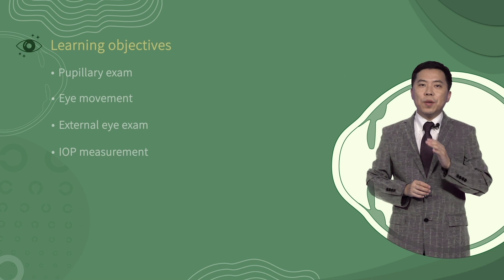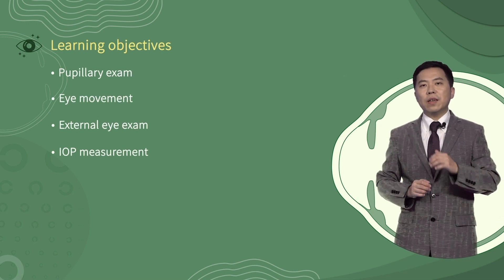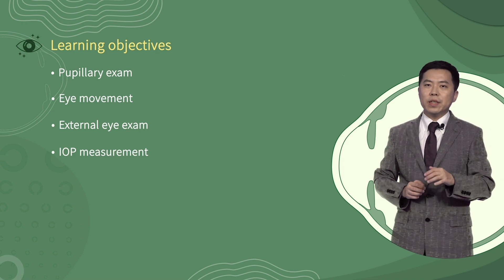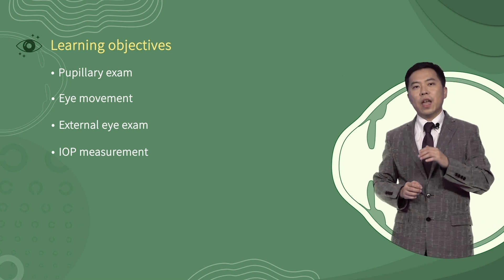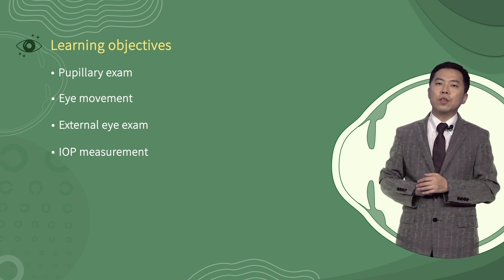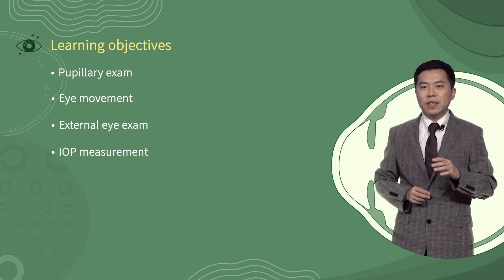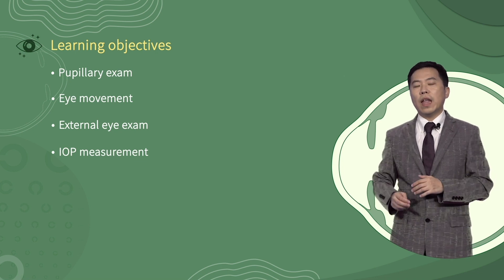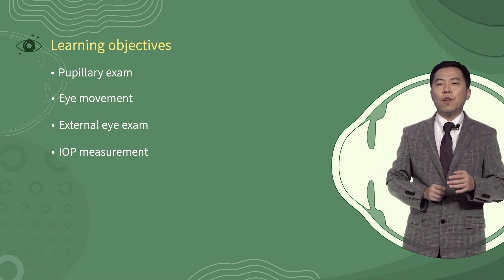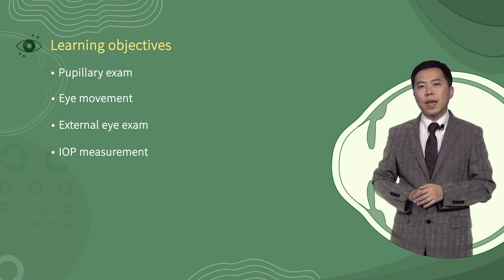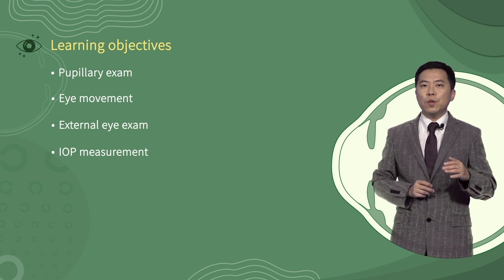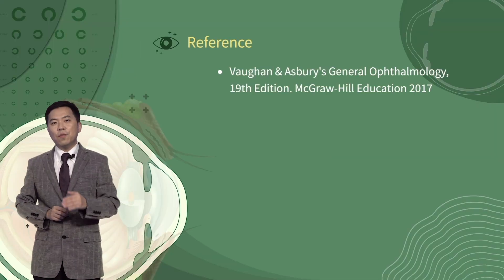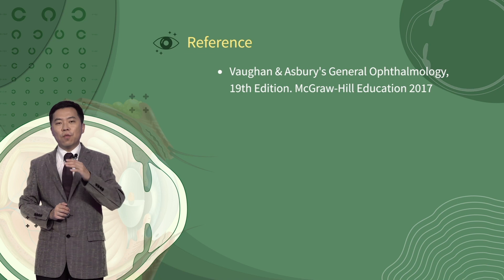Pupillary response, ocular alignment, ocular movement, external eye, and IOP measurement are all basic and important examinations in ophthalmology. Some of them are not only for eye diseases, but also for neurological and other systemic disorders. Therefore, we all need to master them. These tests can be performed without specific instruments, so you can practice by yourself. Thank you for your attention. Here are some references for further reading.